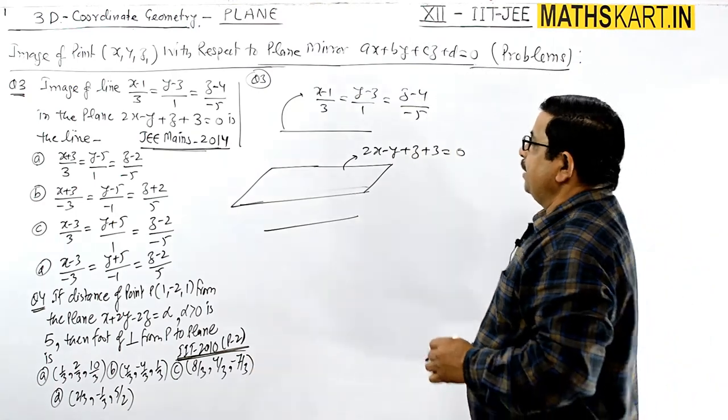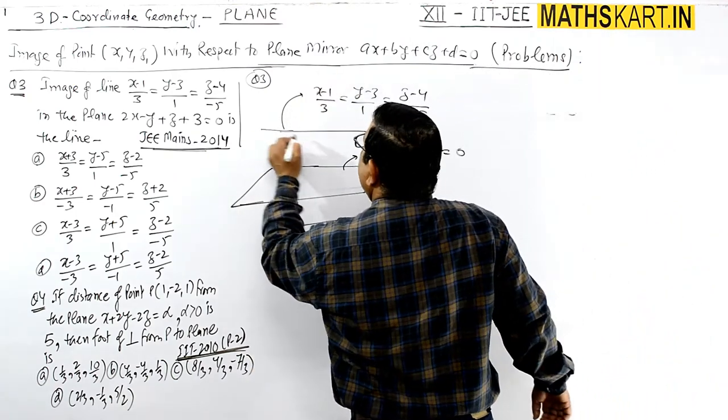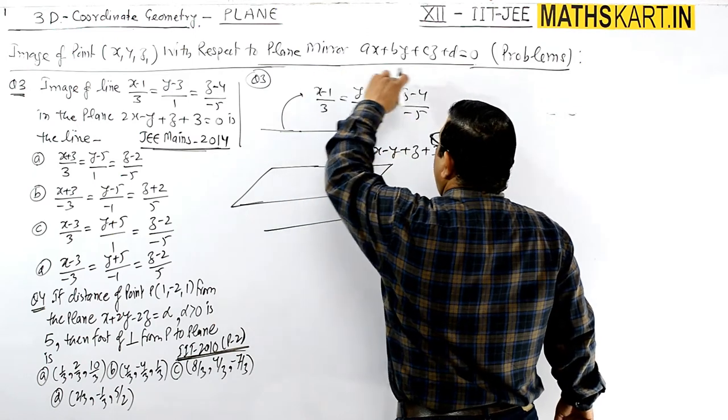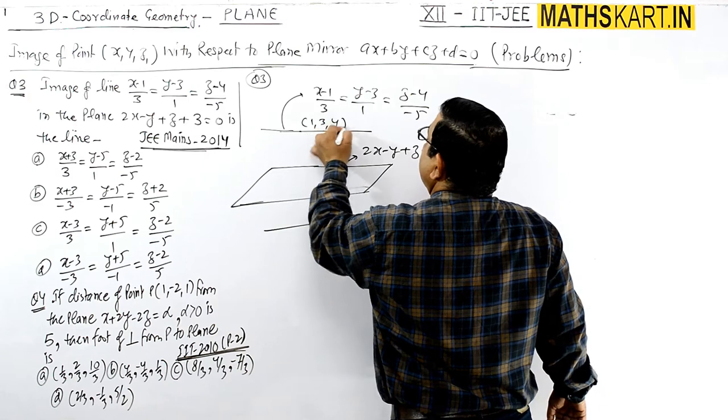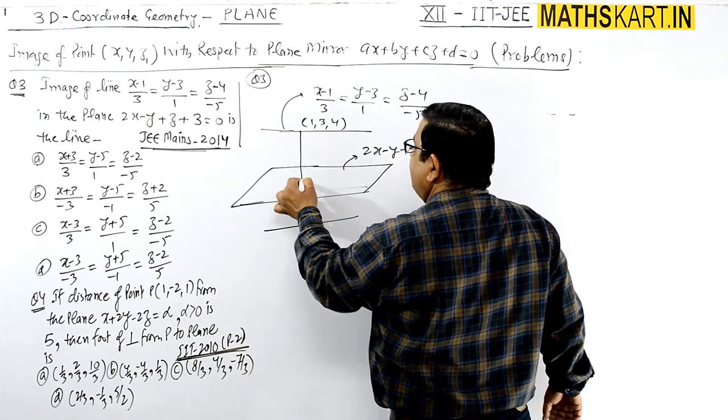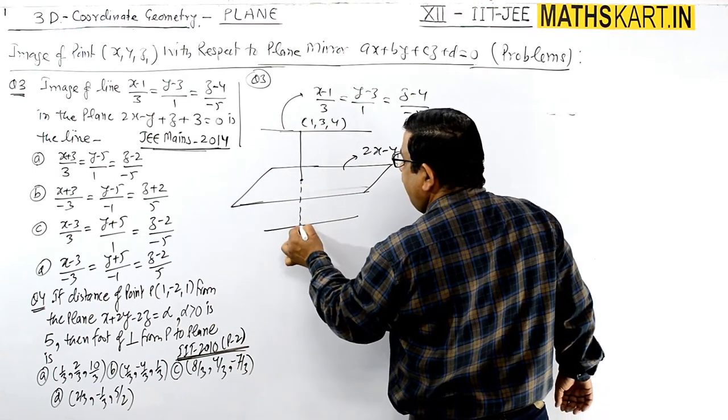When the plane and line are known, how do we find the image? We'll take a fixed point on the line. We know this line has a point (1, 3, 4). This point is (1, 3, 4).